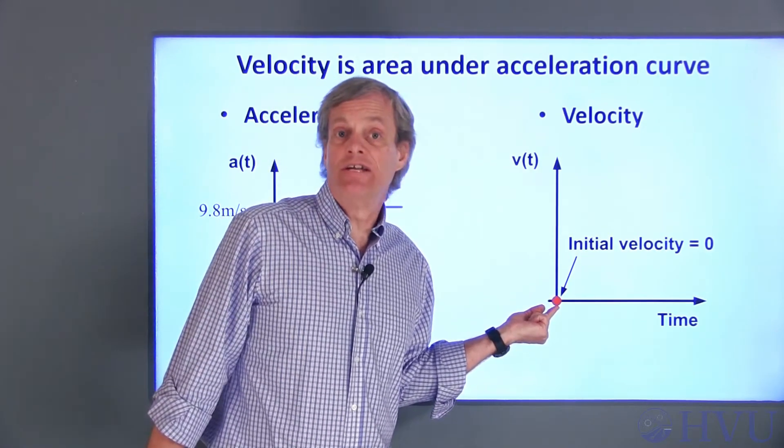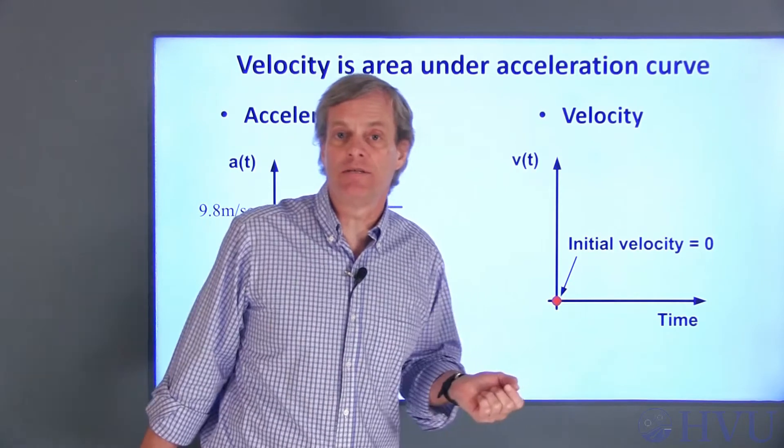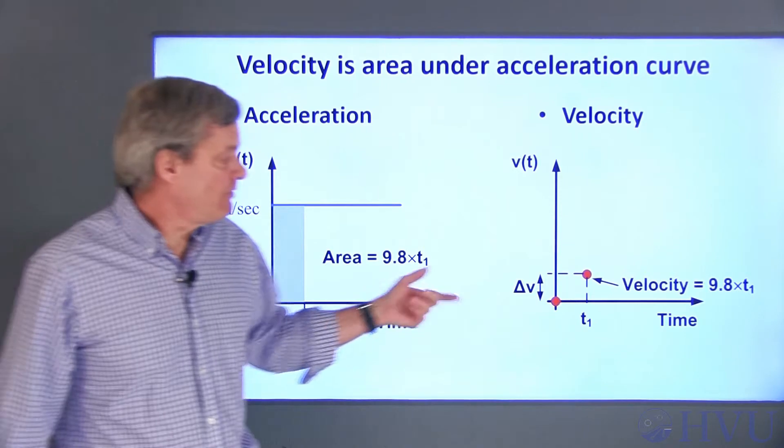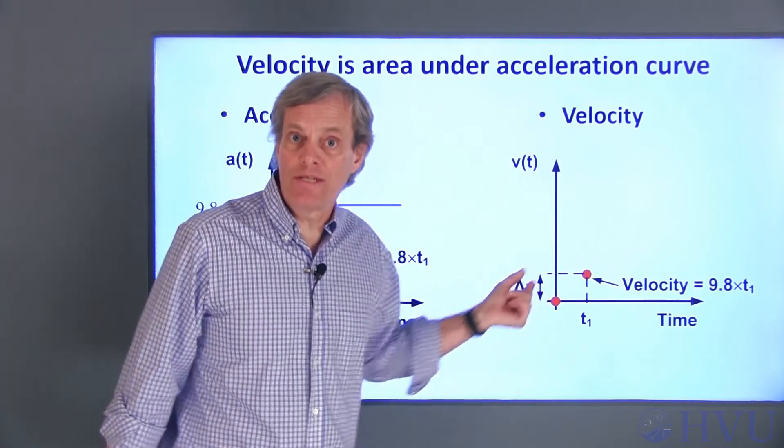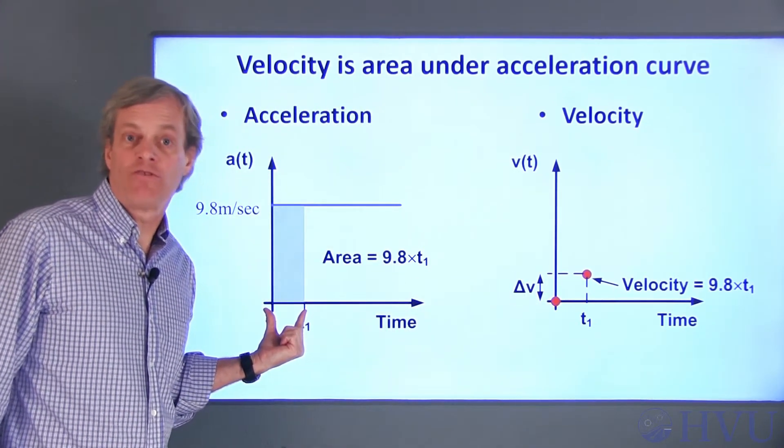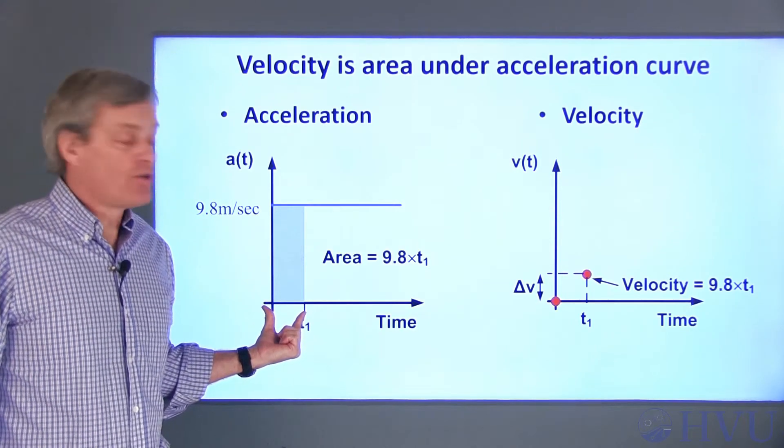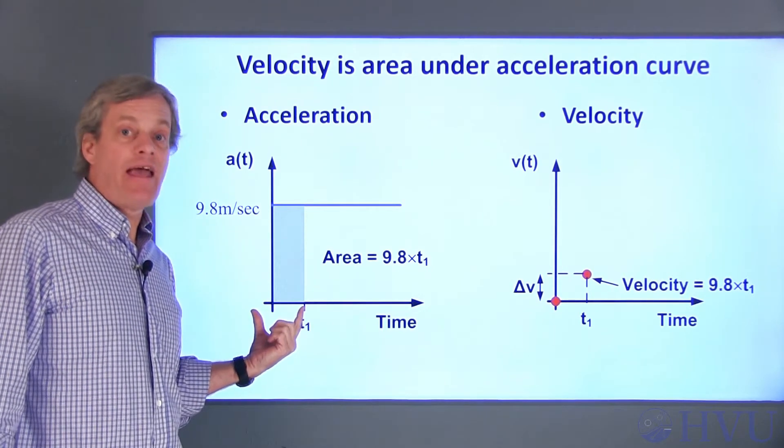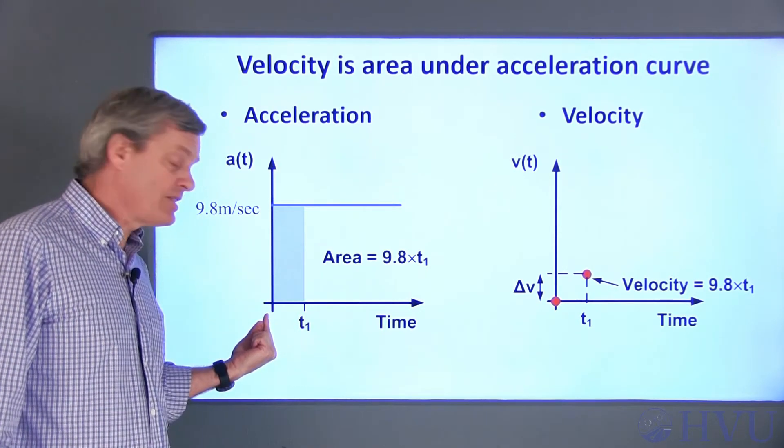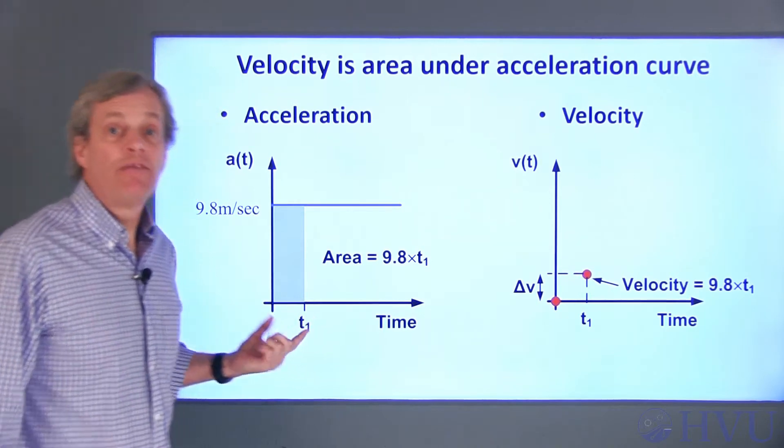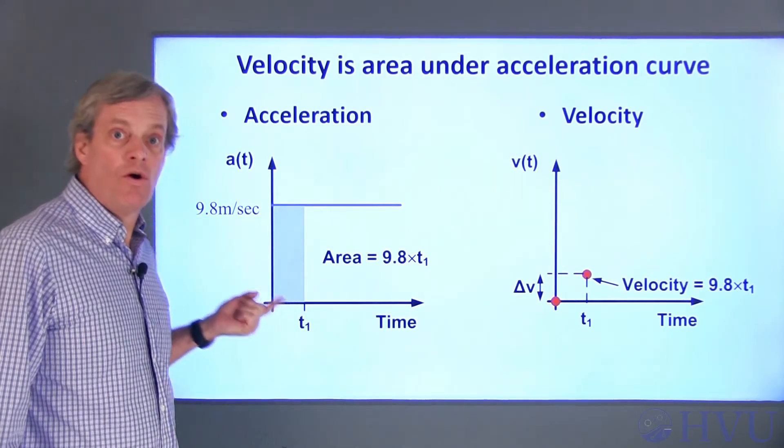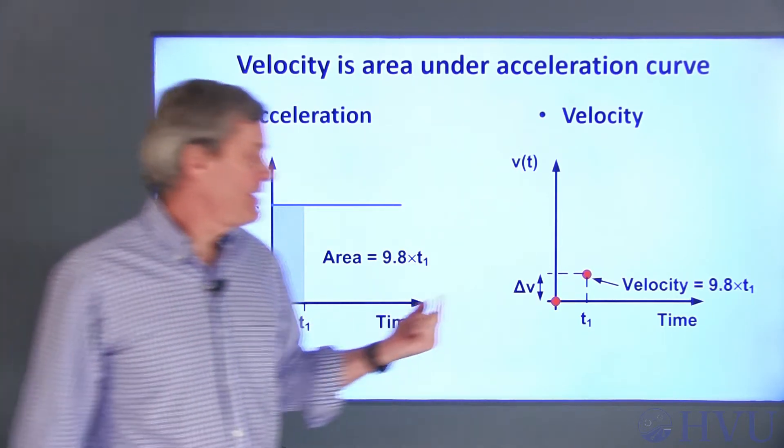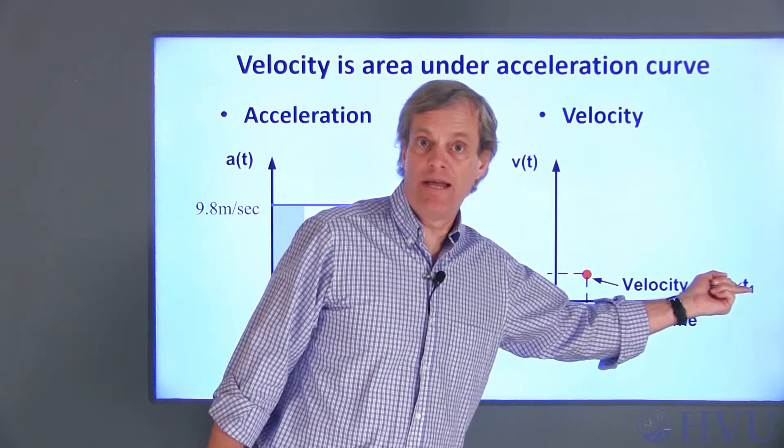If we assume that the rock is initially at rest, this initial velocity will be zero. So this is our initial condition, or the integration constant. Since velocity is the integral of acceleration, the change in velocity between two points is just the area under the acceleration curve between those points. So the velocity at a time t1 is the initial velocity, zero, plus the area under the acceleration curve between time zero and t1. This area is just the area of a rectangle, with height 9.8 and base t1, so the velocity at time t1 is 9.8 times t1.